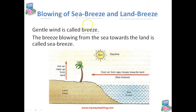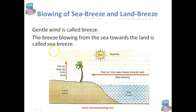These two are based on transfer of heat in air by convection currents. During the daytime when sun shines, the breeze blowing from the sea towards the land is called as sea breeze.